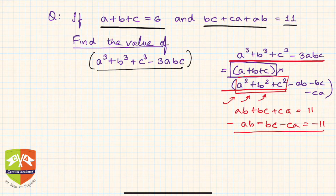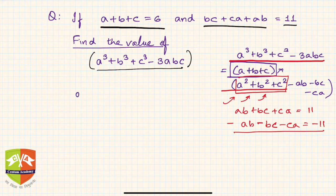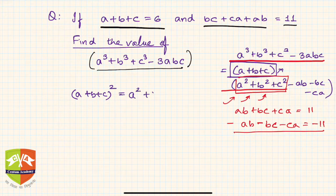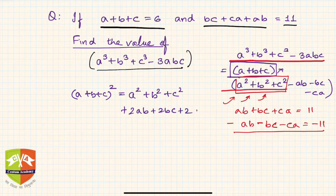To find a square plus b square plus c square, since a plus b plus c is known, we use the identity: a plus b plus c, whole squared, is equal to a square plus b square plus c square plus 2ab plus 2bc plus 2ca.